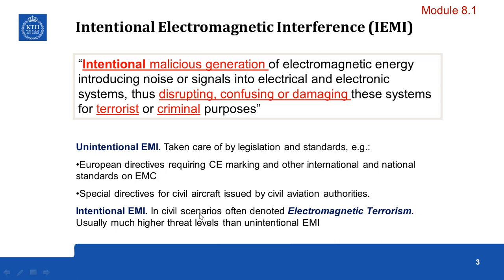When it comes to intentional EMI, regulations are still developing, and it is so difficult to make regulations because it is often the intent that creates these problems. In civil scenarios it is often denoted as electromagnetic terrorism. The threat levels of EMI are usually much higher than unintentional EMI because there is an intention behind it, making it much more complicated to address using normal civilian standards.